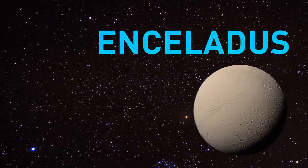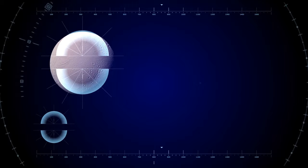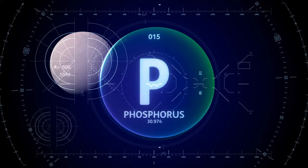Consider now Enceladus, Saturn's icy moon, one of the most promising places to look for life outside Earth. Scientists have just detected the last one of the six necessary ingredients for its formation, phosphorus. This rarest element has been discovered in an ocean on Enceladus.